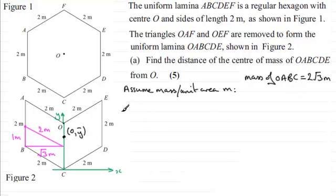So what I'm going to do then is take moments about the x-axis. So we've got the total mass, which is going to be twice this, so we've got 2 times 2 root 3 m. And that's going to be multiplied by the distance of the center of mass back to x, which is going to be y-bar. Now this moment here is going to be equal then to the moment of each of the separate laminas, OABC and OEDC about x.